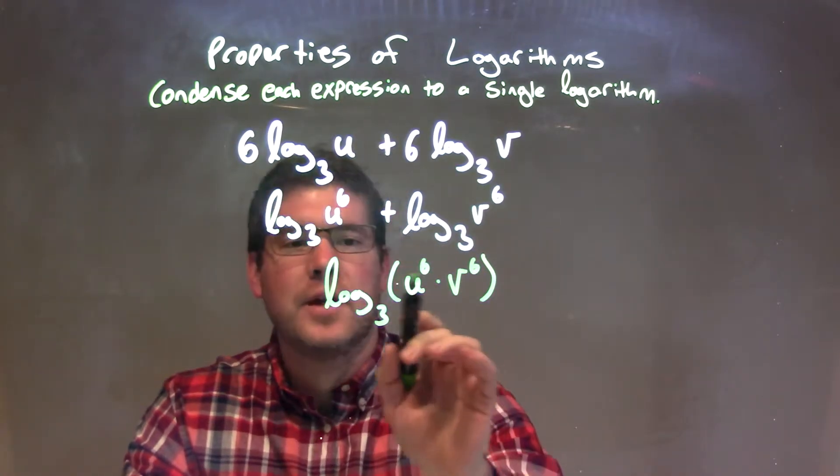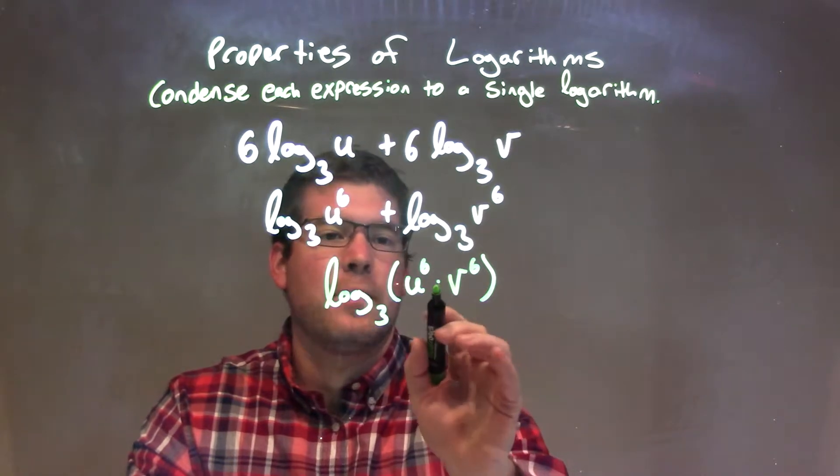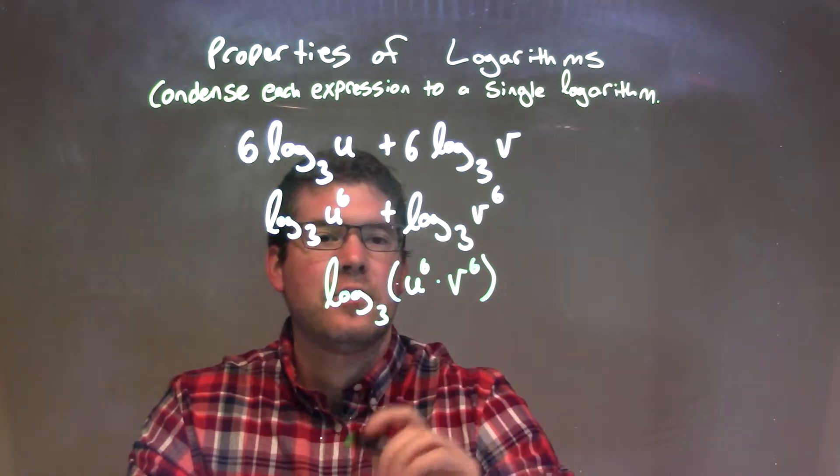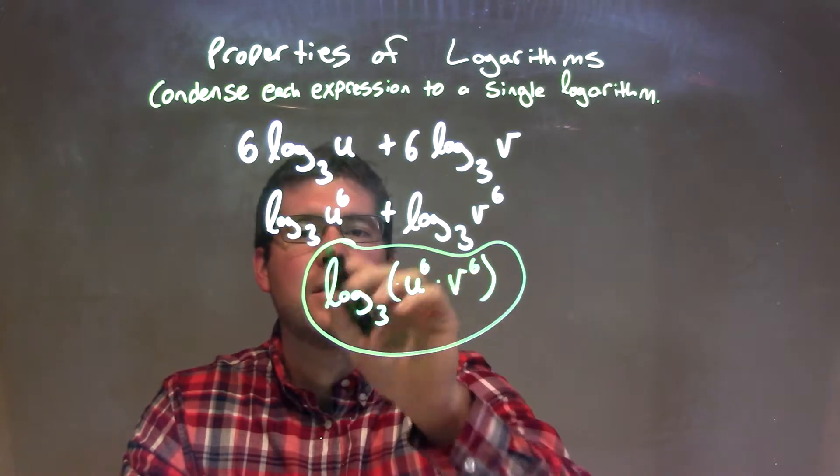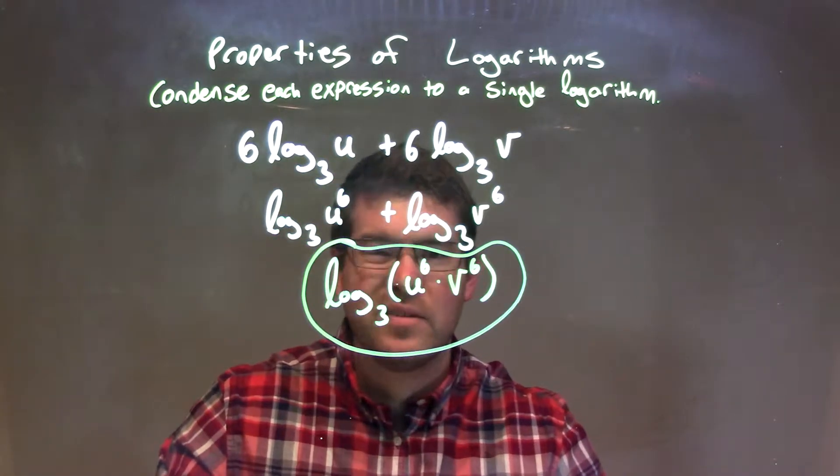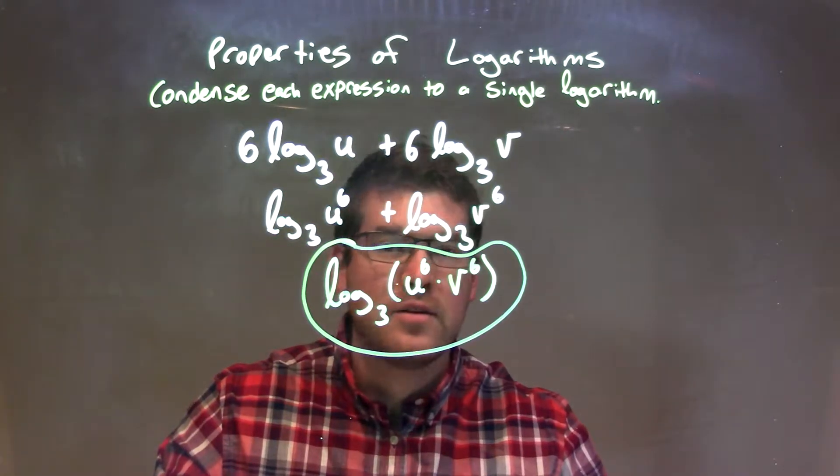Alright. Now, parentheses will show that we'll take log base 3 of that whole thing, but that multiplication came from the addition. So again, this is our final answer here, log base 3 of parentheses u to the 6th times v to the 6th.